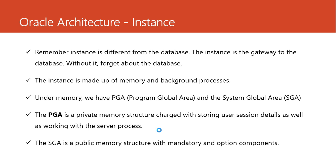Apart from that, the PGA also stores user session variables and user session details. For example, to know that somebody connected at this time — maybe Abraham connected at this time and they left at this time. Remember, the user session records that someone connected to the database with this username at this time. All this information is stored in the PGA. The information contained in the PGA is private information, and that is why the PGA is a private memory structure — it's not shared.